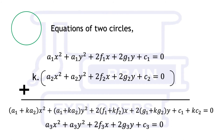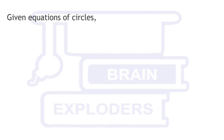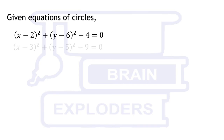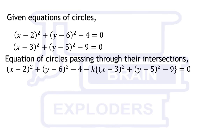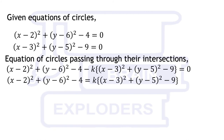Now, in place of general equations of circles, take the equations given in our problem. So equation 1 minus k times equation 2 gives the equation of a circle passing through the intersection of both the given circles.